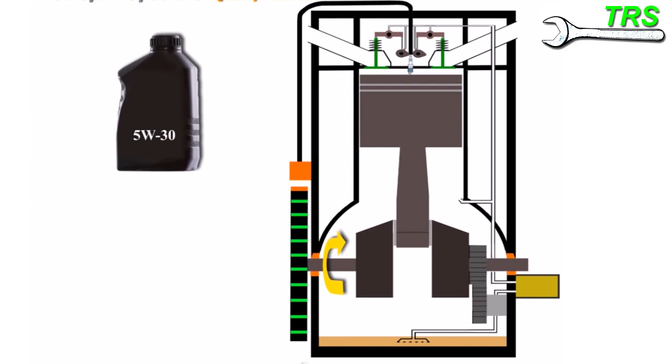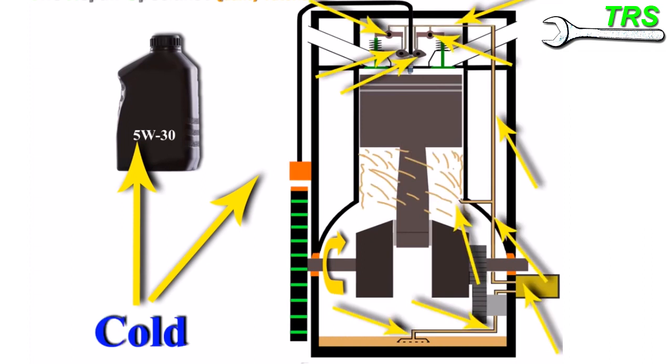Let's start here at the 5W. When we first start the engine and the engine's cold, the oil will be cold, so the 5 means that it's got a viscosity of 5, so it's very thin. That means it'll get up to all of these areas and around to the engine parts as quick as possible. But the important thing to remember is this is when the oil is cold.